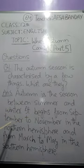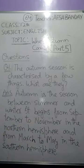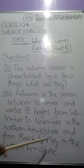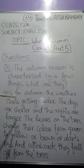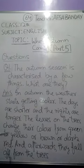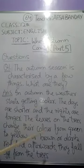Autumn begins from September to November in the northern hemisphere, that means to the north of the equator, and from March to May in the southern hemisphere, that means towards the south of the equator. In autumn the weather starts getting cooler because before autumn there is summer and summers are usually hot, so in autumn the weather starts getting cooler gradually.